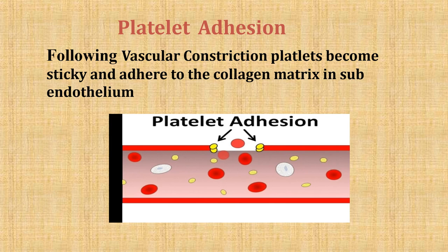The platelet binding site for von Willebrand factor is located on a major glycoprotein of the platelet membrane called GP1b. Megakaryocytes also synthesize von Willebrand factor, which is a normal constituent of alpha granules and is secreted during platelet activation. Von Willebrand factor is synthesized from both megakaryocytes and vascular endothelial cells. It is an acute-phase protein, so plasma levels rise in inflammatory states and also during the third trimester of pregnancy.